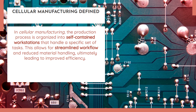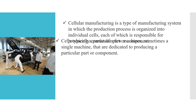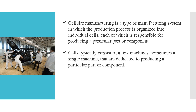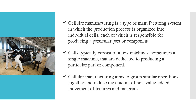In cellular manufacturing, the production process is organized in self-contained workstations. It is managed in a simplified workstation format where it is easy to handle a specific set of tasks and operations. It consists of very few machines — sometimes even a single machine — dedicated to producing a particular part or component. Cellular manufacturing aims to group similar operations together and reduce the amount of non-value-added movement of features and materials.